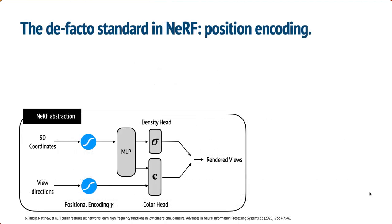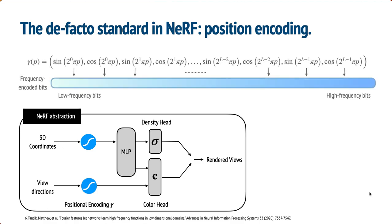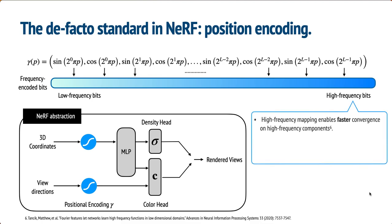Our motivation stems from the frequency domain. Using frequency-embedded positional encoding is a common practice in training NeRFs. The Fourier feature network shows that high-frequency mappings enable faster convergence for high-frequency components. However, this can be problematic in few-shot NeRF learning, as overly fast convergence leads to catastrophic overfitting, causing scene reconstruction learning to fail.